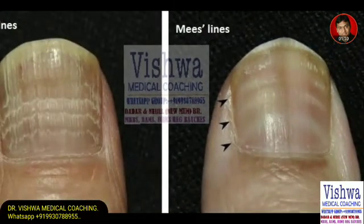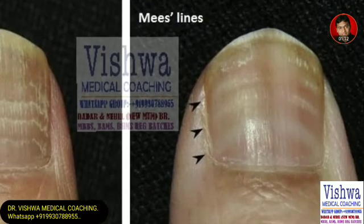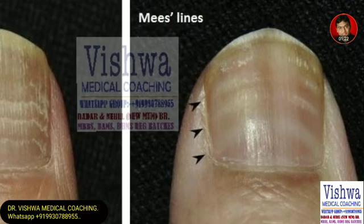Mees' lines, on the other hand, are not deep furrows — they are just hypopigmented locations on the nail. These can be very commonly found in cases of heavy metal poisonings: arsenic poisoning, thallium poisoning, and selenium poisoning. They can also be found in kidney failure.